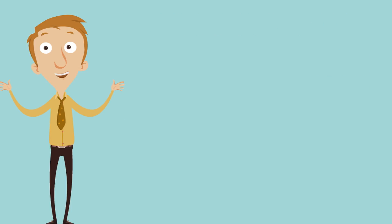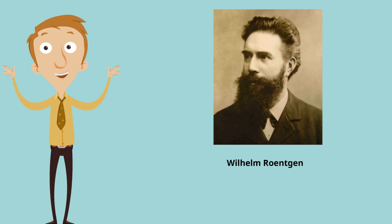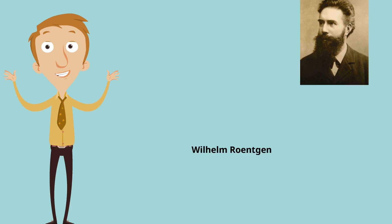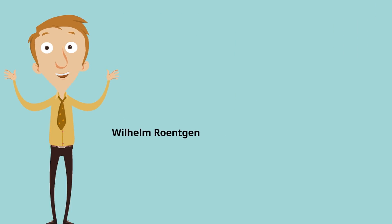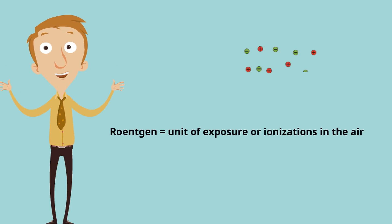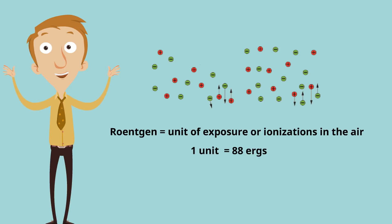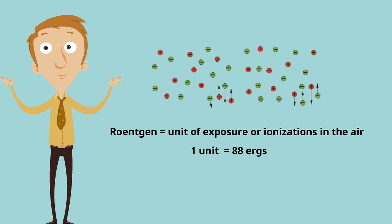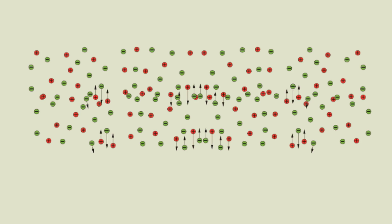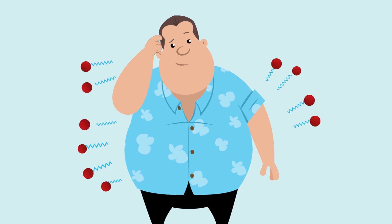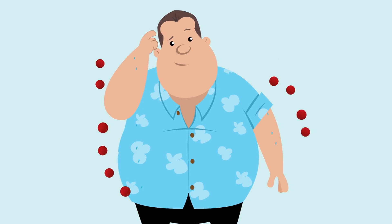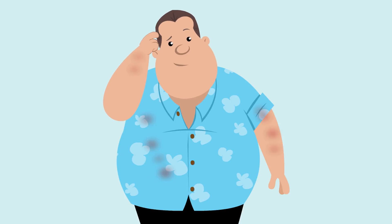X-rays were discovered in 1895 by Willem Roentgen. In his honor, the Roentgen became the unit of exposure, or ionizations in the air, with one unit being equivalent to 88 ergs. So that gives us the amount of radiation in the area, but how do we measure radiation entering our bodies?